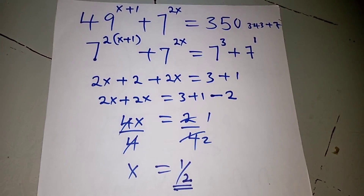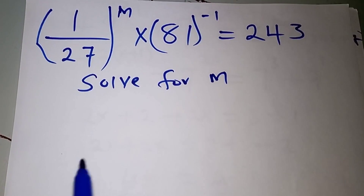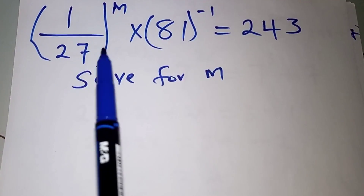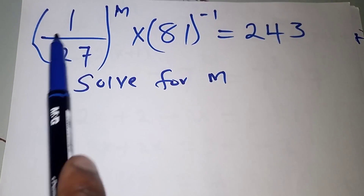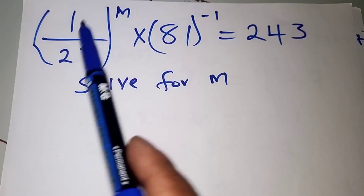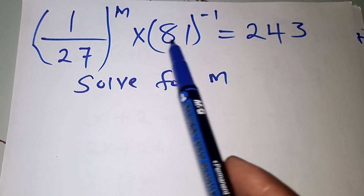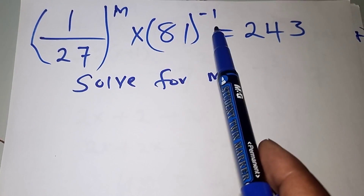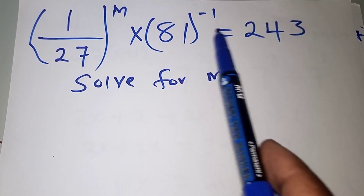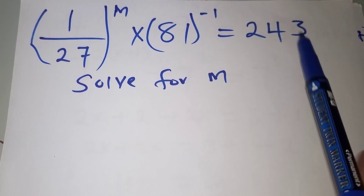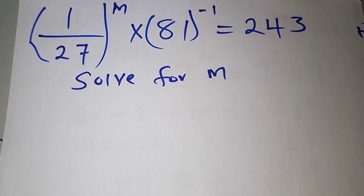Moving on to the next question: we have 1 over 27 to the power m, times 81 to the power negative 1, equals 243.